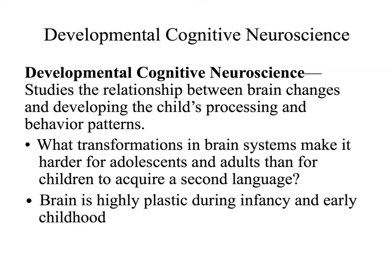For example, if anyone comes to the United States from another country where English is not the first language, it is not unusual for a child younger than the age of 12 to acquire language skills very rapidly. However, if someone comes at a later age — say after 15 — it is likely that even though they may live here for 30 years, their accent will not completely disappear, and that is because of changes in the brain as we mature.